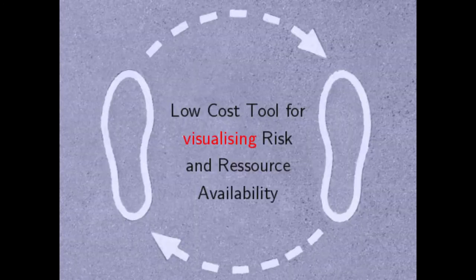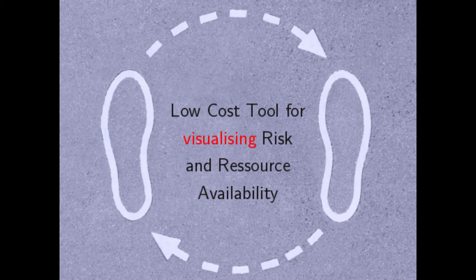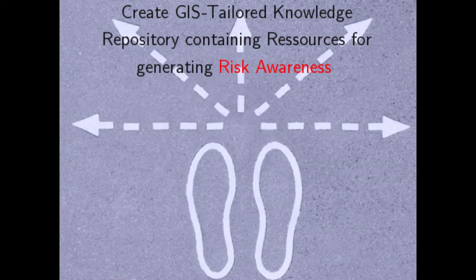In conclusion, with the visual representation of risk minimizing measures, local risks are intended to be minimized. A low-cost eWAS tool for risk visualization has been developed. As next steps, a GIS-tailored knowledge repository containing resources for generating risk awareness — like videos, text information, and so on — has to be created, to enable the provision of GIS-tailored information adjusted to the needs of the local population and, consequently, to minimize local risks.